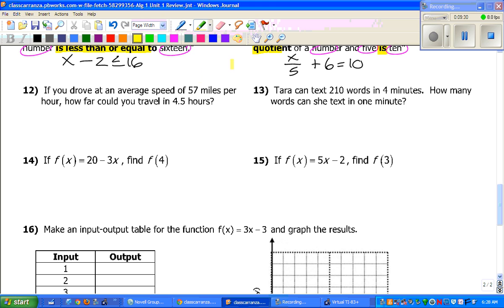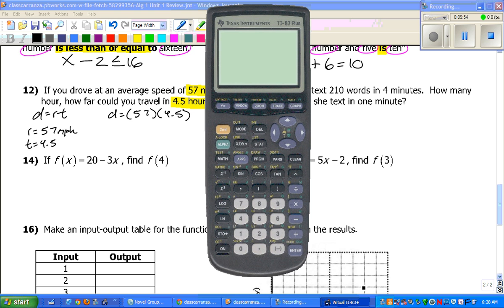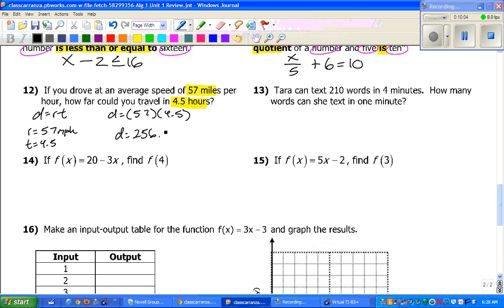Number 12. If you drove an average speed of 57 miles per hour for 4 and a half hours, how far could you travel? That's asking you to remember distance equals rate times time. Your rate is 57 miles per hour. Your time is 4 and a half. So, just plug those numbers in. And all you've got to do is multiply. 57 times 4.5 gives you 256.5. And it's asking you how far. So, you drove that many miles.